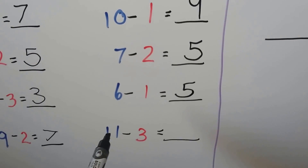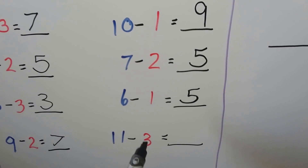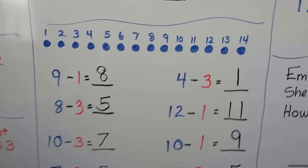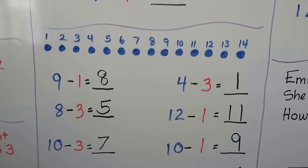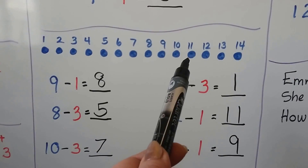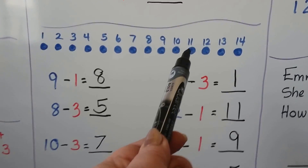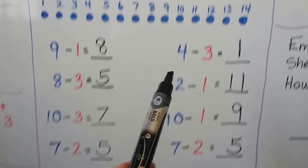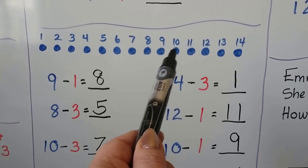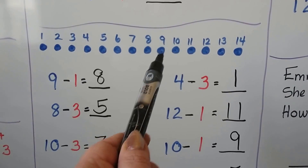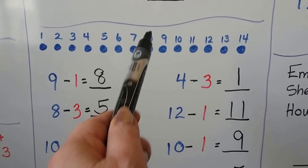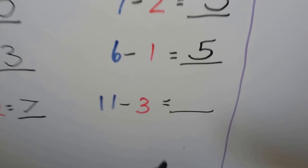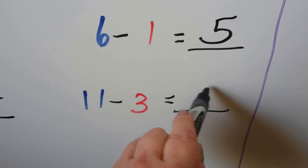11 minus 3. We start at the 11 and count back 3. Do you see the 11? There it is. We want to count back 3: 1, 2, 3. That brings us to 8. 11 minus 3 is equal to 8.